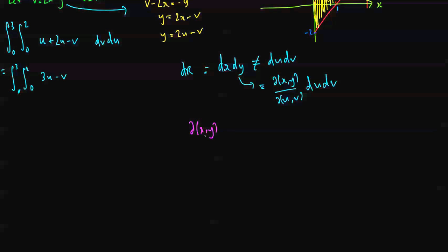dx dy du dv is equal to the absolute value of the determinant of this matrix: dx du, dx dv, dy du, dy dv. And the reason is because of the chain rule in two dimensions.